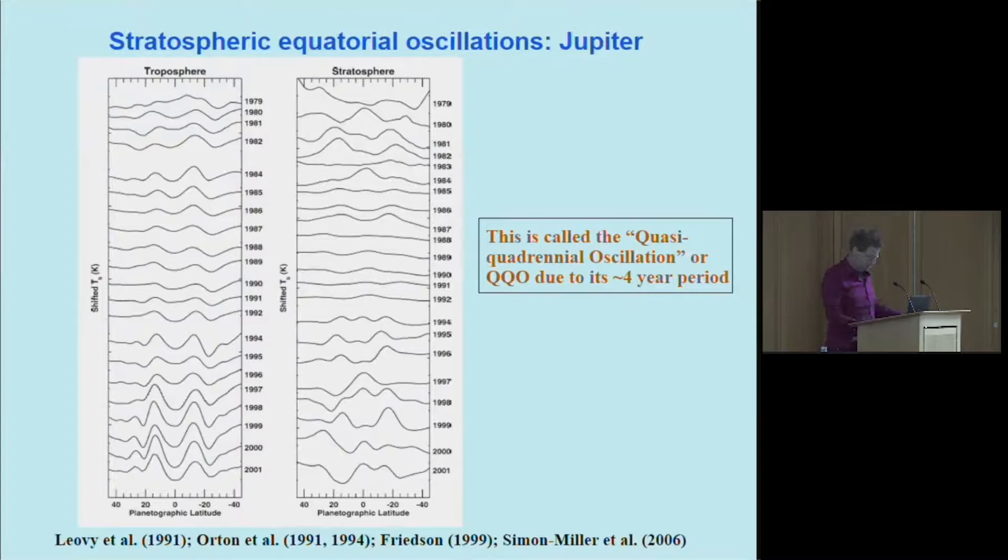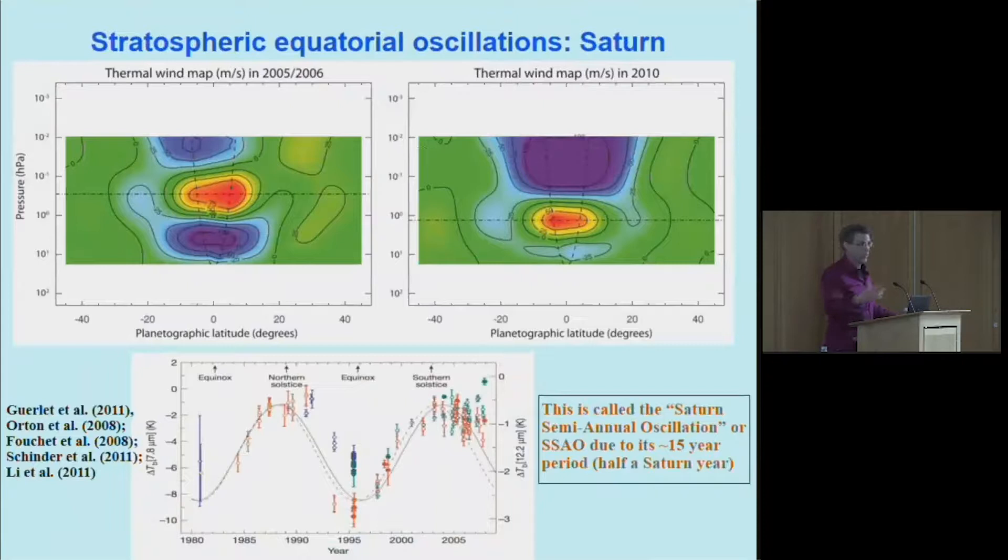The same thing occurs on Saturn. On Jupiter this is called the quasi-quadrennial oscillation or QQO due to its four-year period. On Saturn the same kind of oscillation has a period of 15 years, which interestingly is half a Saturn year. Because of the dynamical link between temperatures and winds on a rapidly rotating planet, these variations in temperature imply a variation in wind. If you use just a thermal wind sort of analysis, you can infer observationally what the wind pattern is doing.